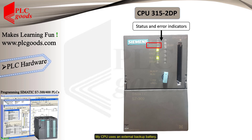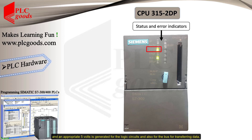My CPU uses an external backup battery. The second LED indicates whether the connected backup battery is OK or not. When the next LED is green, it means the CPU is powered and an appropriate 5 volts is generated for the logic circuits and for the bus for transferring data. When the FORCE LED is a steady yellow, it indicates that at least one of the PLC inputs or outputs is forced to ON or OFF.